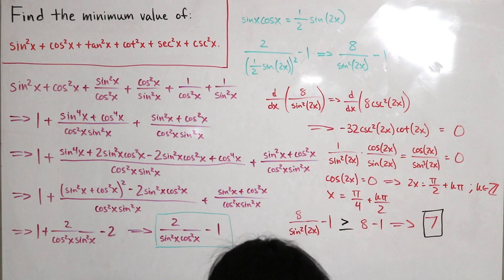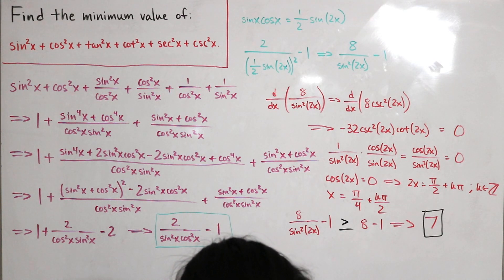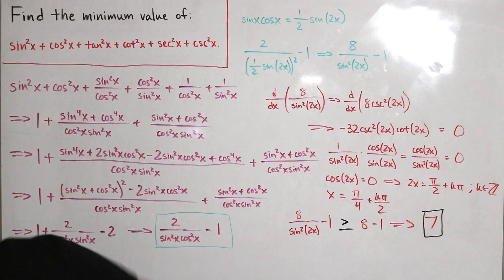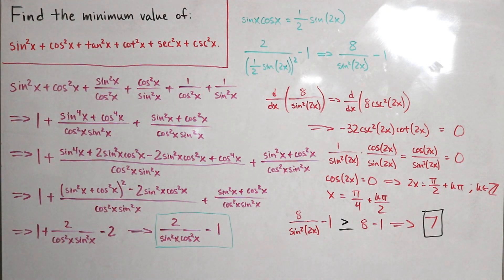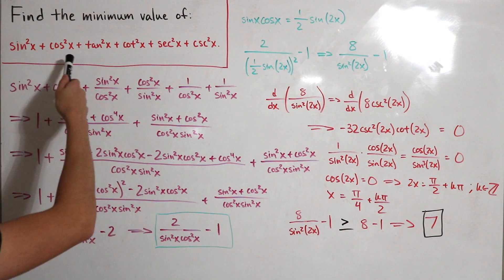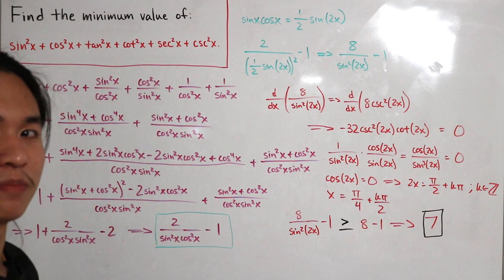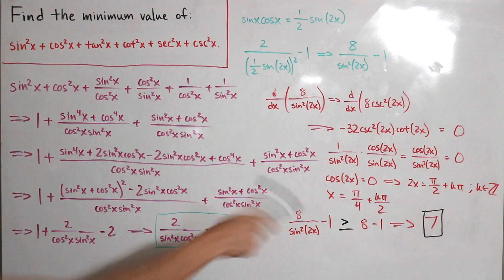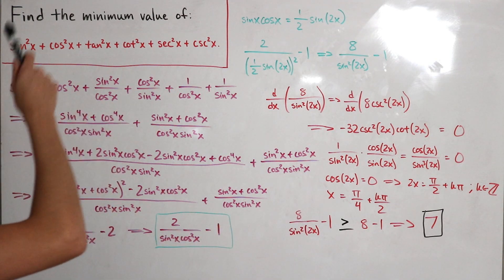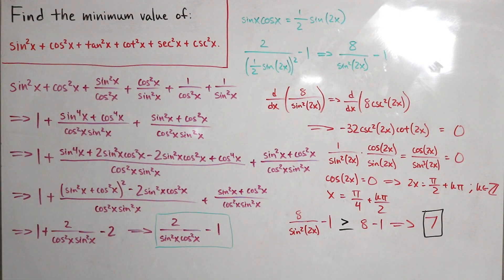There are a lot of neat things here — a little bit of calculus, a whole lot of trigonometry. But it really comes down to calculus. Seven is the minimum value of sine squared of x plus cosine squared of x plus tangent squared of x plus cotangent squared of x plus secant squared of x plus cosecant squared of x.